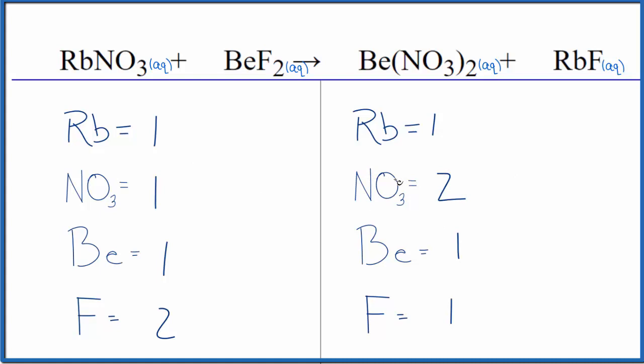Let's start by balancing the nitrate. If we put a two in front of the rubidium nitrate, one times two, that'll give us two rubidiums. And then we have the one nitrate times two, that'll give us two nitrates. So the nitrates are balanced.